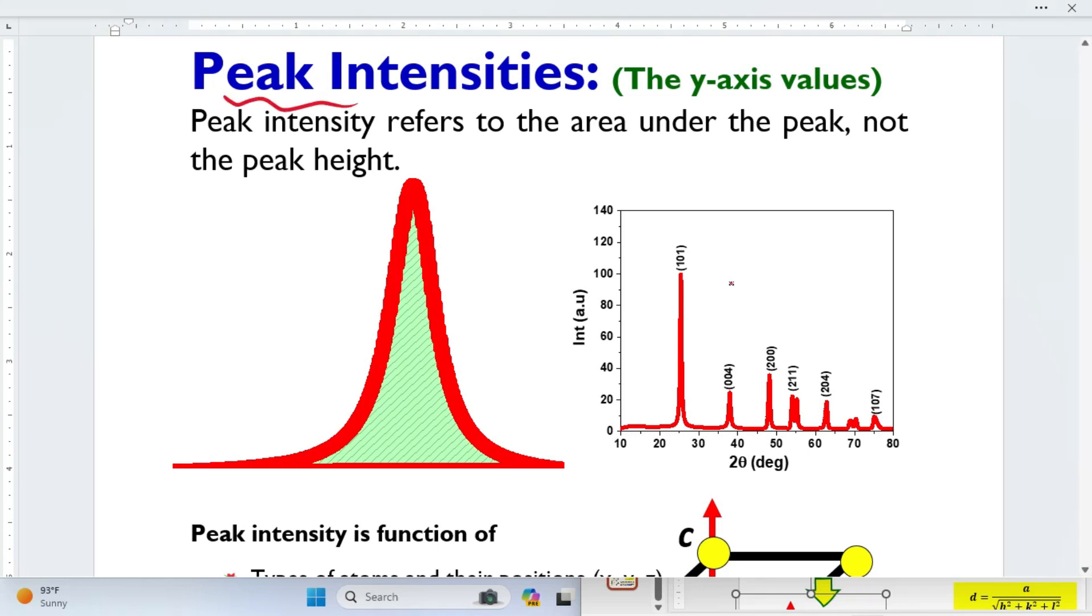Peak intensity in XRD provides a lot of information. It is basically the Y axis value. Peak intensity does not mean height of the peak. It basically means area under the curve. Look here, I just magnified this peak and how it looks like. This area under the peak is basically the intensity. Peak intensity refers to the area under the peak, not the peak height.